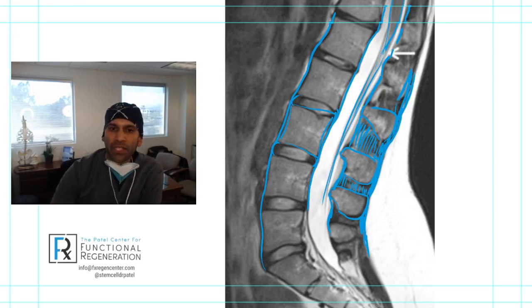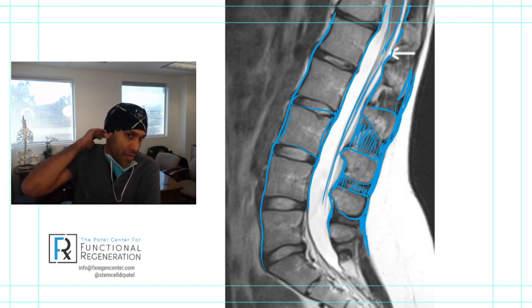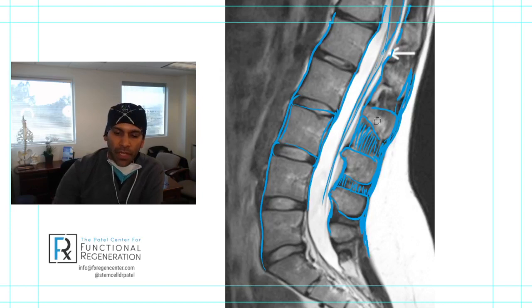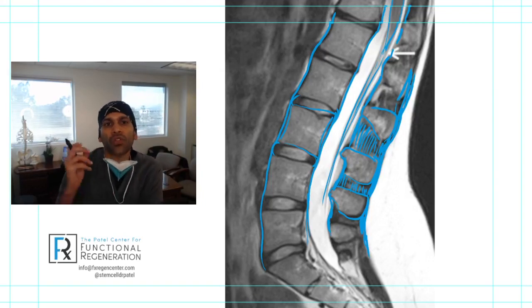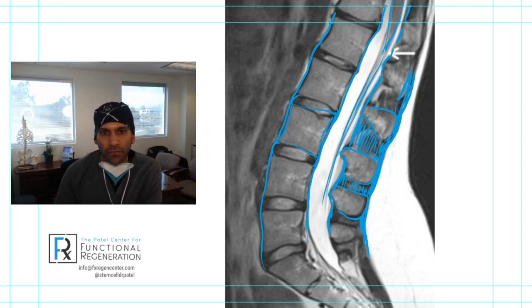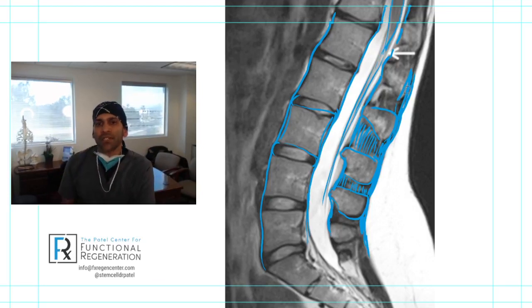The supraspinous ligament is actually continuous from your sacrum — the base of your spine — all the way through the lumbar spine, through the upper back and thoracic spine, all the way to the neck. It's contiguous with the ligamentum nuchae, which goes all the way to the skull. Similarly, the ligamentum flavum, the posterior longitudinal ligament, and the anterior longitudinal ligament are all essentially continuous from the base of your spine up to your neck and skull.